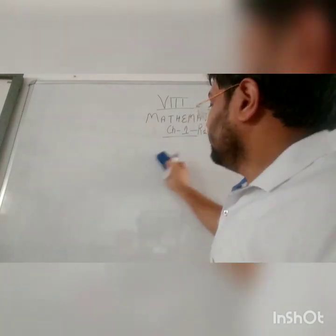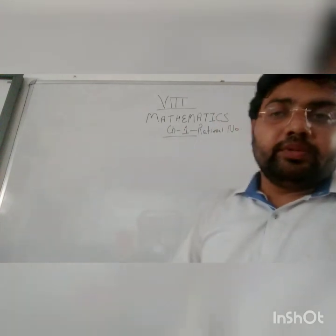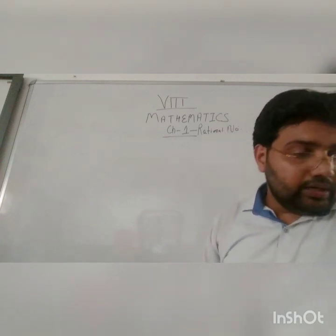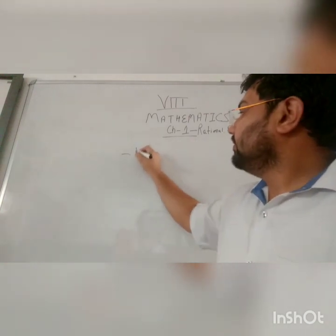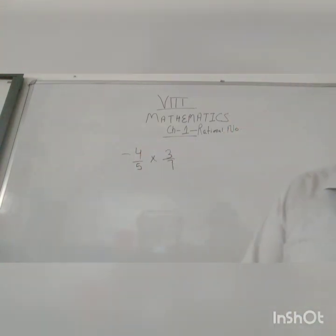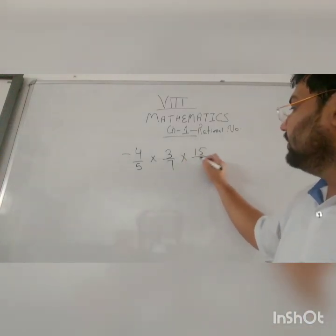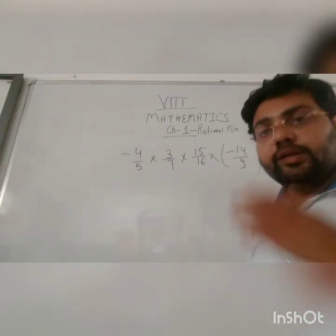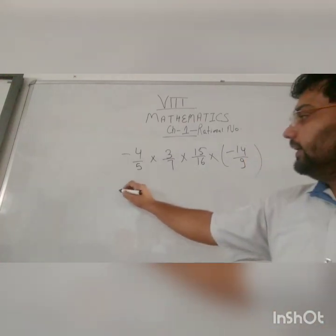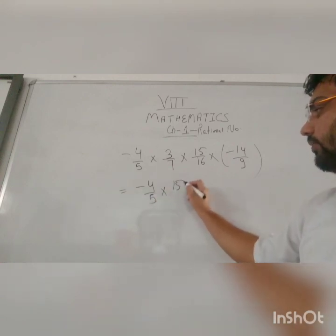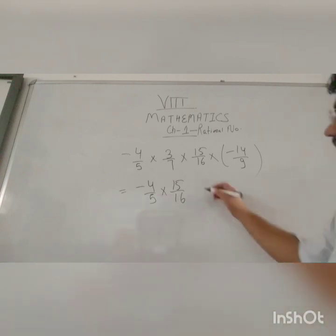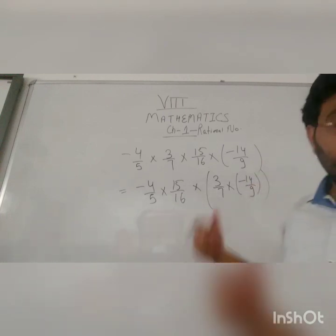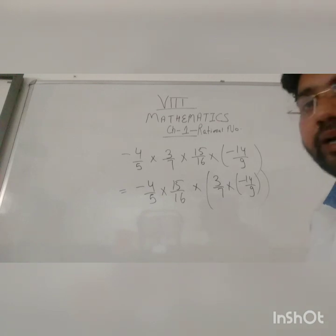Now we will look at an example that we will solve using the properties of associativity and commutativity. The example is: minus 4 by 5 into 3 by 7 into 15 by 16 into minus 14 by 9. You can rewrite it as minus 4 by 5 into 15 by 16 into 3 by 7 into minus 14 by 9. Here we have used the property of commutativity and associativity in multiplication.